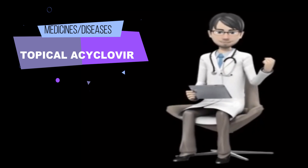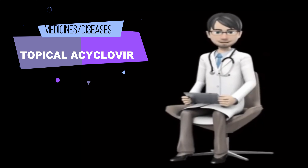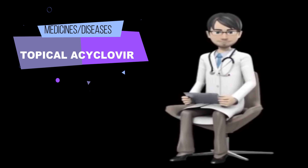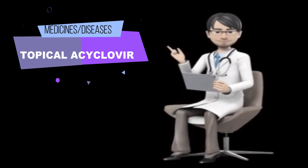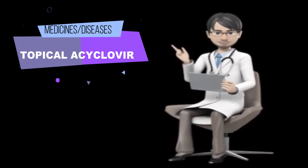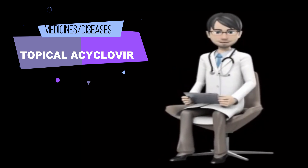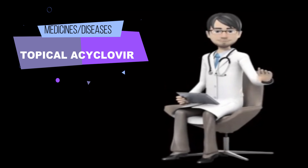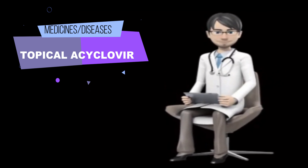Acyclovir is in a class of antiviral medications called synthetic nucleoside analogs. It works by stopping the spread of the herpes virus in the body. Acyclovir does not cure cold sores or genital herpes, does not prevent outbreaks of these conditions, and does not stop the spread of these conditions to other people.